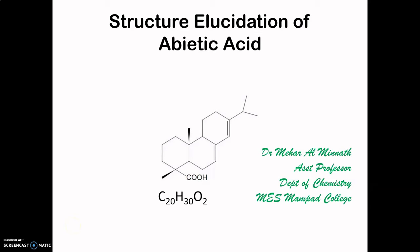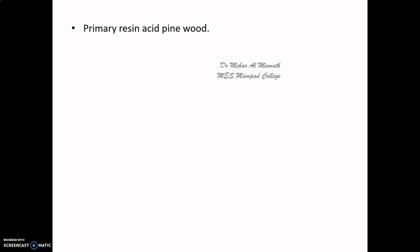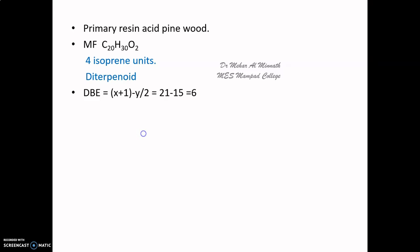We shall look at the structural elucidation of abietic acid, which is a terpenoid. Abietic acid is a primary resin acid present in pine wood. It has the molecular formula C20H30O2, and from this we can conclude that it has four isoprene units, hence it must be a diterpenoid. The classification is based on the number of isoprene units.